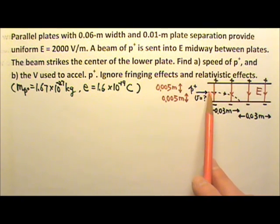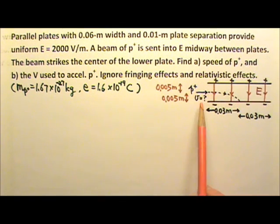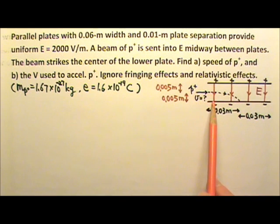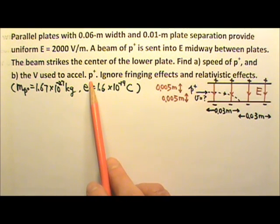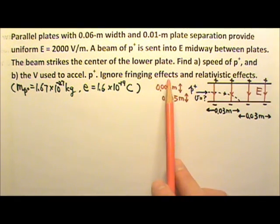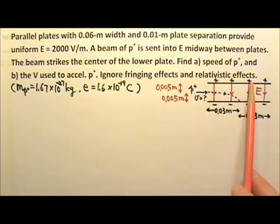The beam gets deflected and strikes the center of the lower plate. Find part A, the speed of the proton beam as it enters the region of uniform electric field, and part B, the voltage used to accelerate these protons. Ignore fringing effects at the edges of the plates and the relativistic effects.